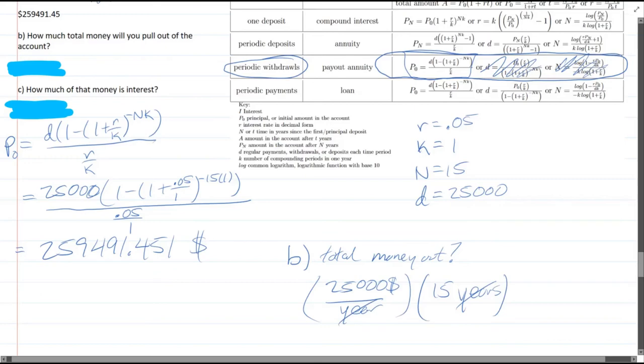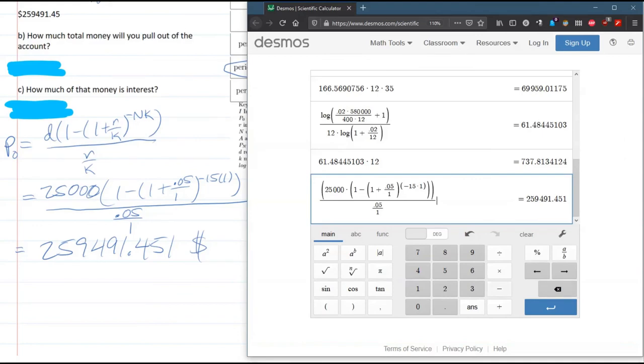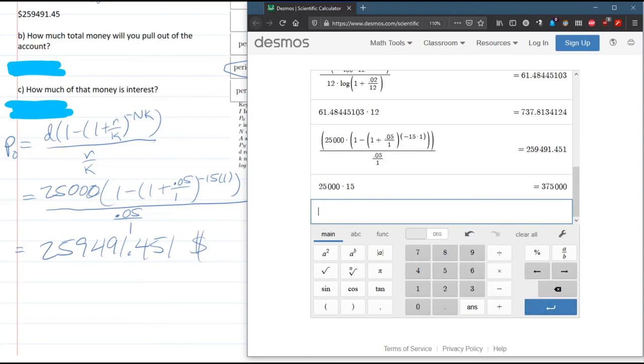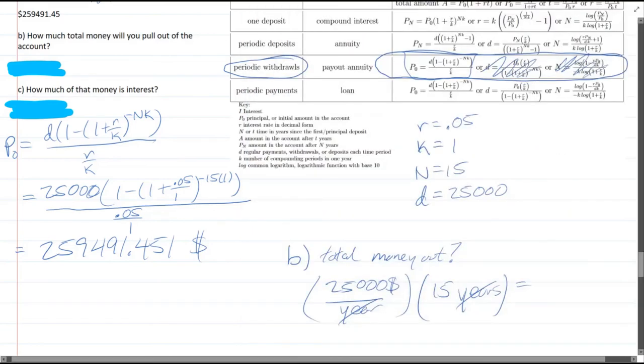And the years cancel on the units. And we just get 25,000 times 15. 375,000. Alright, so that is the answer to B.